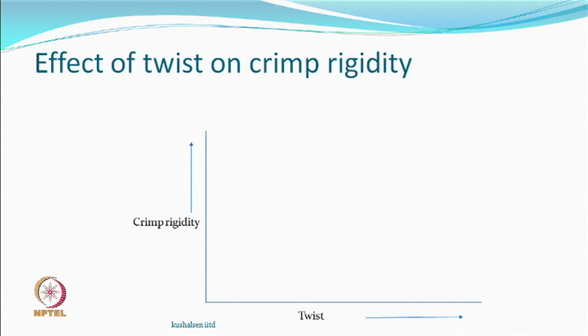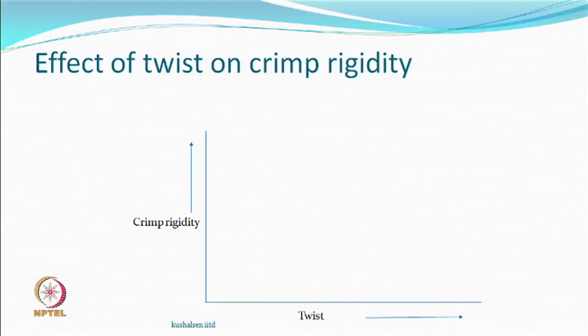We had learnt about how much approximate twist should be given, which is relatively much higher than a normal twist compared to, say, spun yarn twist. The yarn can obviously snarl when you bring together two ends. So the effect of twist on crimp rigidity — when you change the value of twist, what happens?